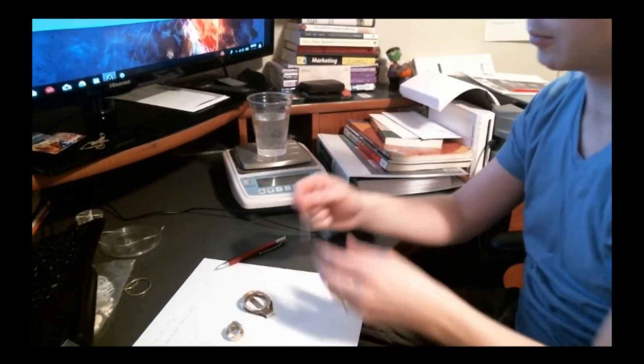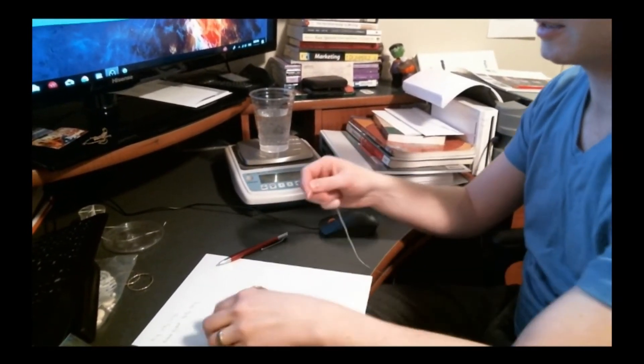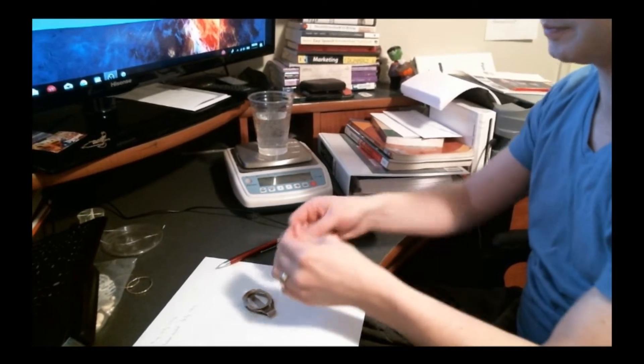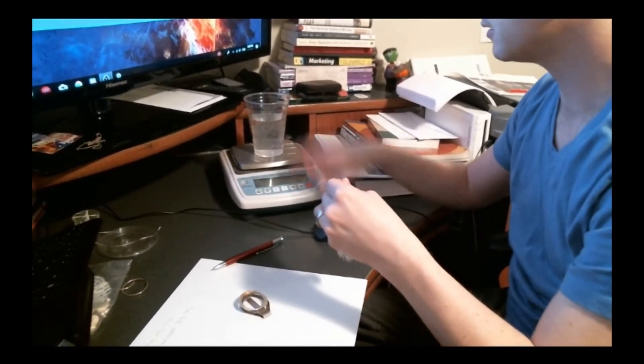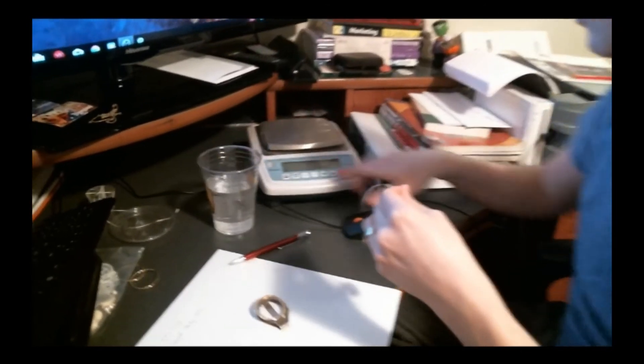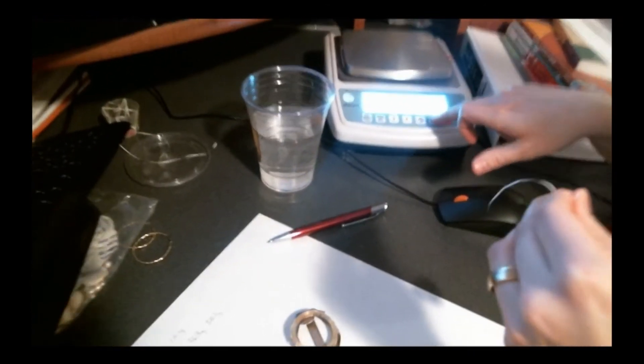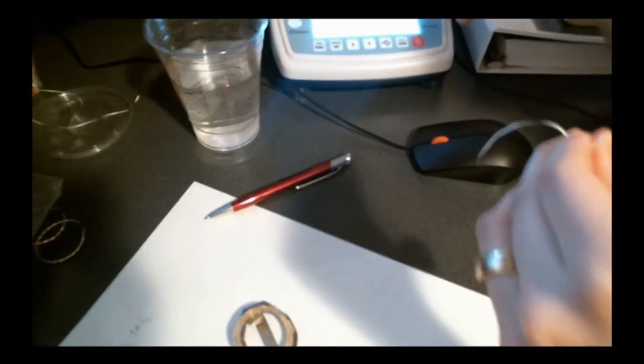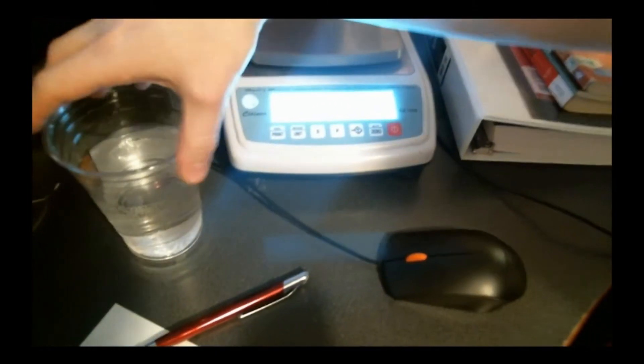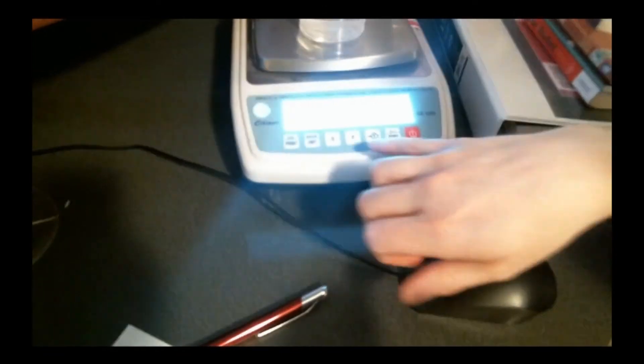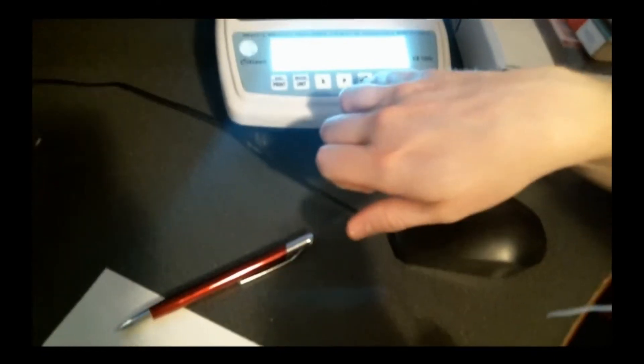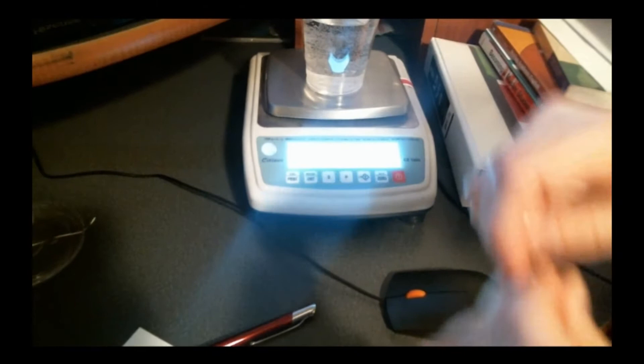So the first step is to tare your water. My scale is kind of fussy sometimes. I'm going to zero it and then we've got to put this on there. It goes up to 320.2 grams and then I'm going to tare it so that it just zeros out.